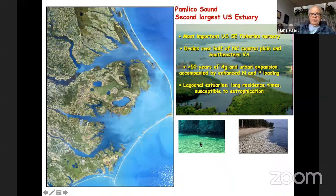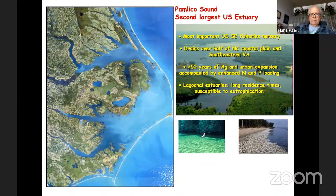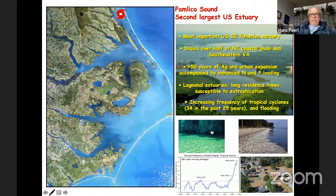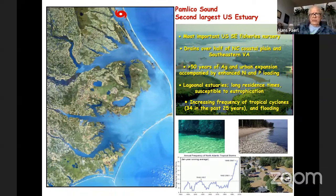What comes into the system stays there for quite a long time, making Pamlico Sound sensitive to eutrophication. One additional mole of nitrogen or phosphorus goes a long way compared to more flushed estuaries. As a result, we've had water quality problems including algal blooms and fish kills. The system has also been experiencing an increasing frequency of hurricanes — over the last 25 years there's been a tremendous upswing in tropical cyclones and in the amount of rainfall and flooding associated with them.